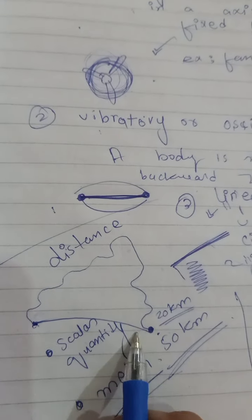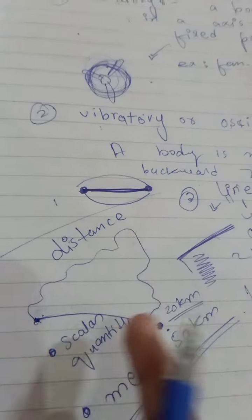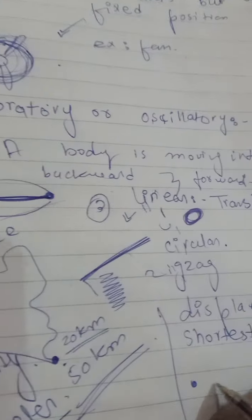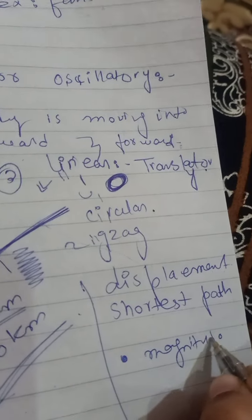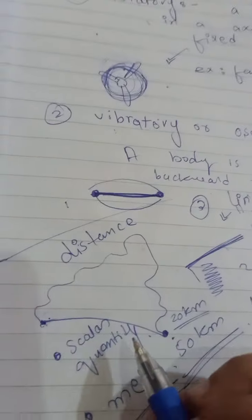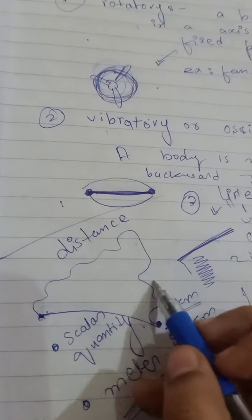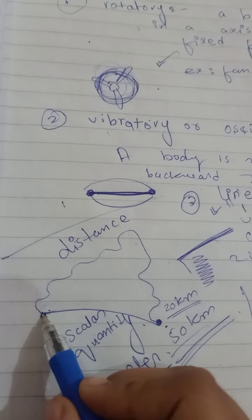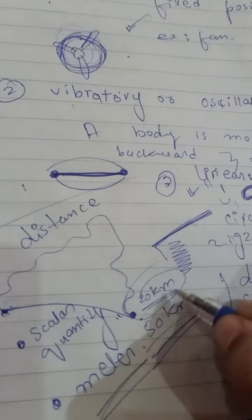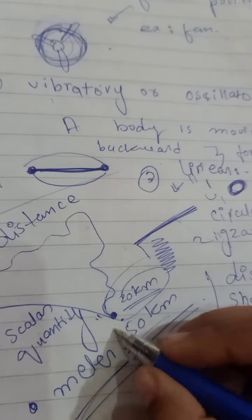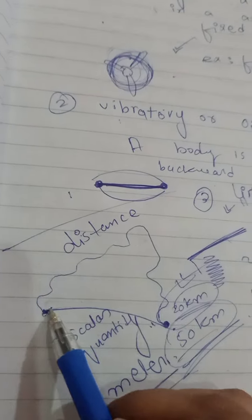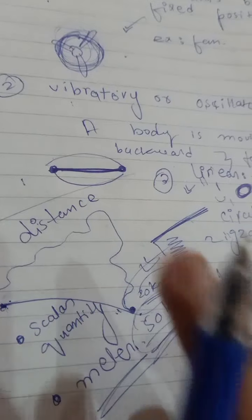In displacement, we know both the magnitude and the direction — for example, a body moves 20 kilometers from point A to point B toward the east. In distance, we do not know the direction. Since displacement includes both magnitude and direction, it is a vector quantity. The shortest path covered — for example, 20 kilometers compared to a longer distance of 50 kilometers — is the displacement.